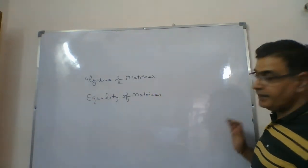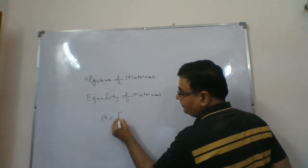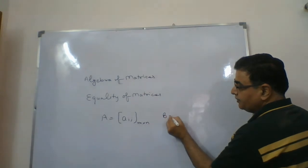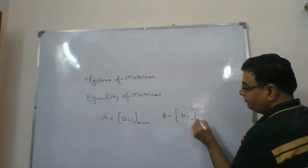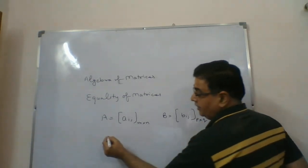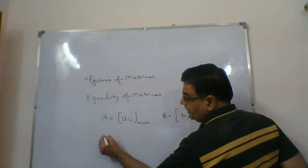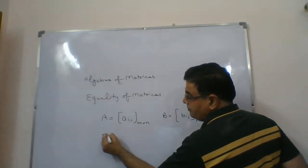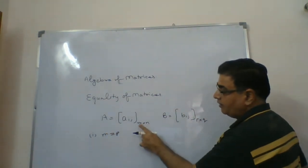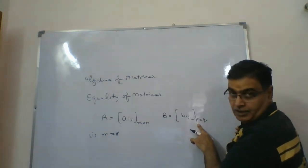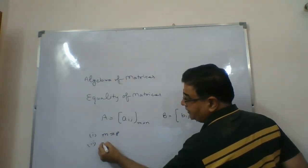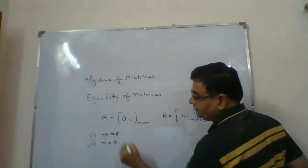Two matrices A and B — matrix A is A_ij of order m into n, and another matrix B is B_ij of order p into q. These two matrices are said to be equal if and only if: first condition, m is equal to p, meaning the number of rows in matrix A should equal the number of rows in matrix B. Second condition, n is equal to q, meaning the number of columns in A should equal the number of columns in B.